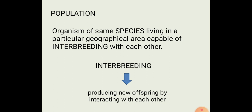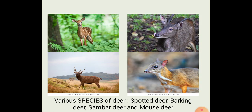Two cats can interbreed. Two dogs can interbreed. We can say this is a population of deer in a forest, which includes various species of deer such as spotted deer, barking deer, sambar deer and mouse deer.